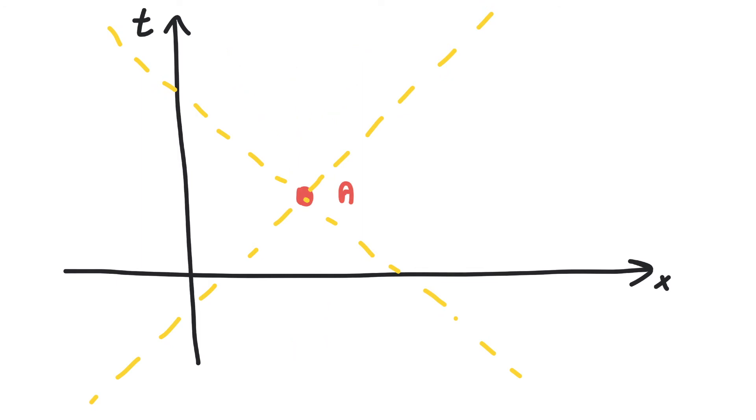This construction is called the light cone. In one time and one spatial dimension it's more of a light triangle, but if we were to draw two spatial components it's really a cone.